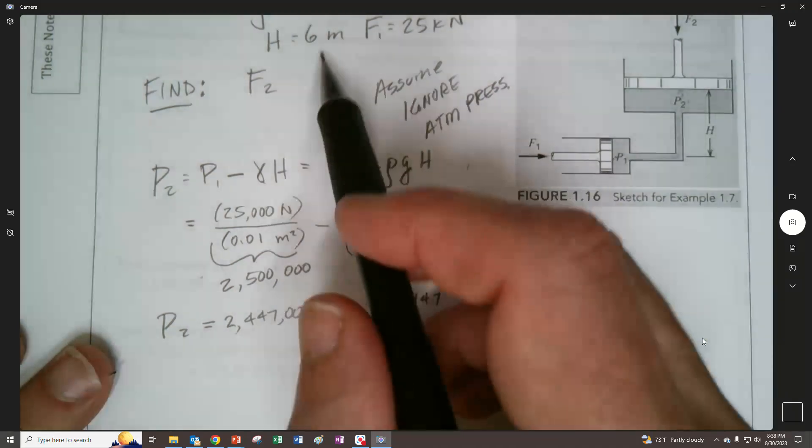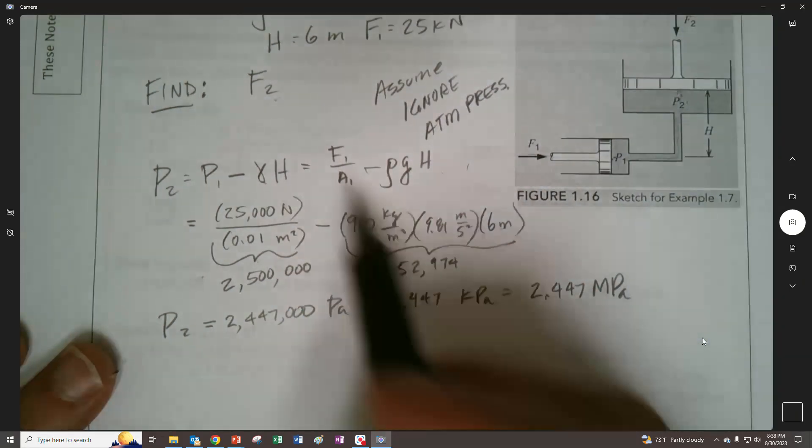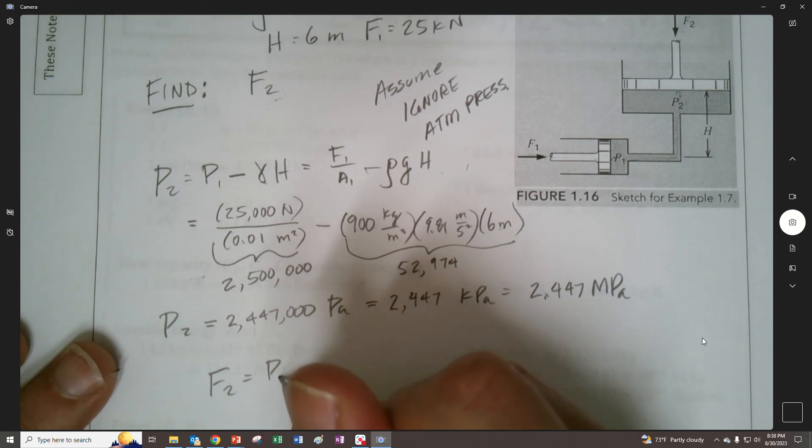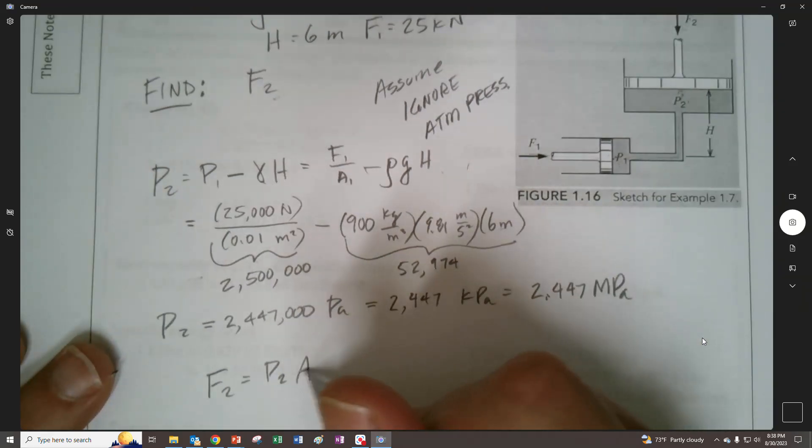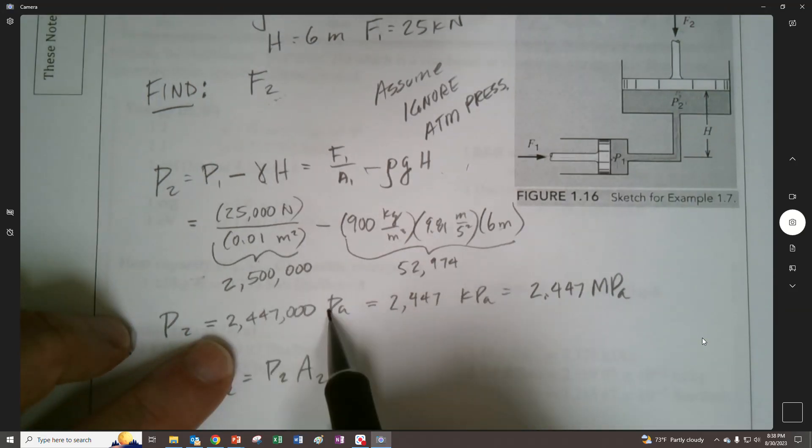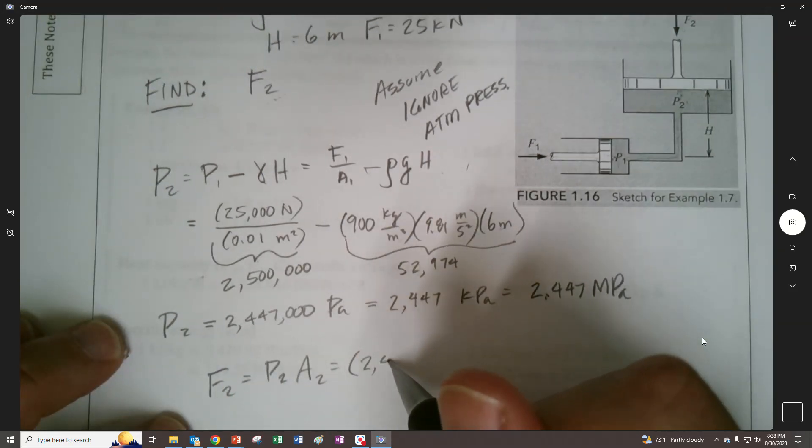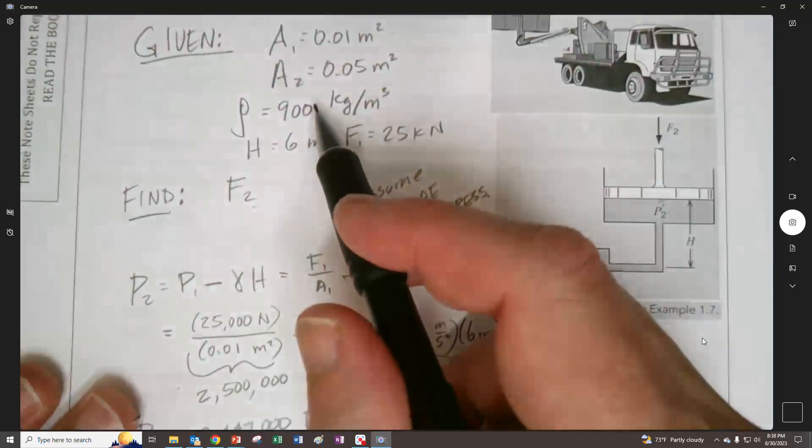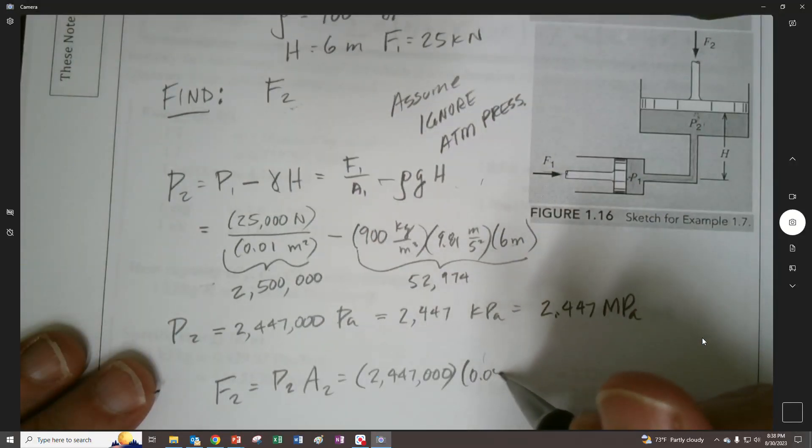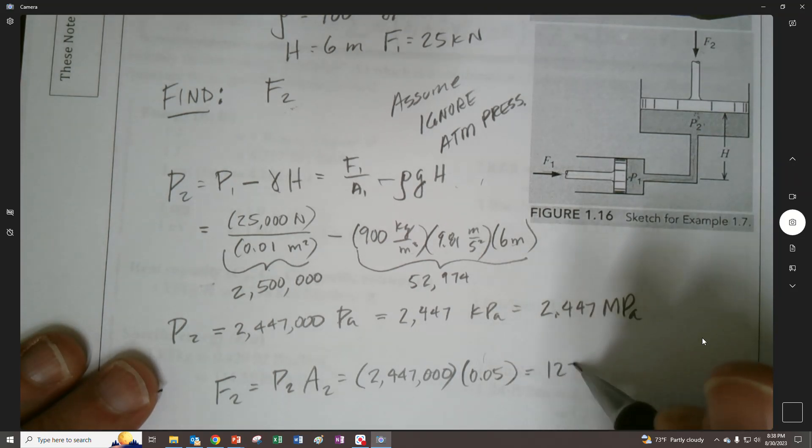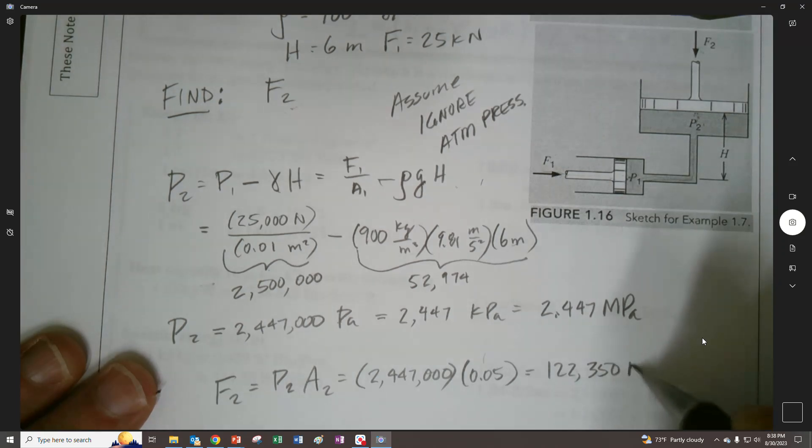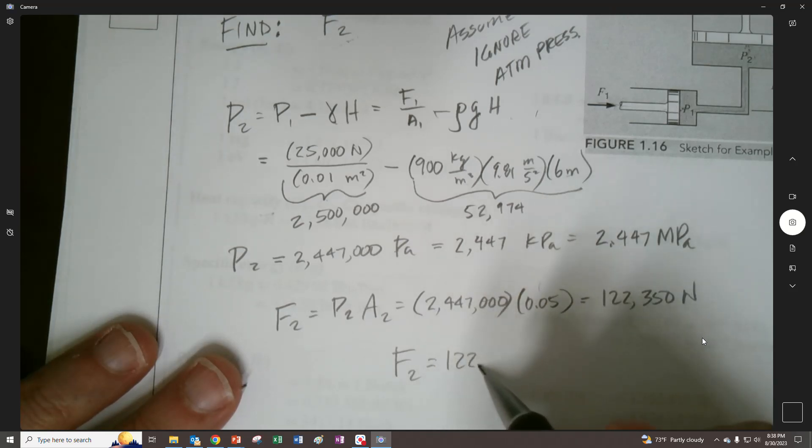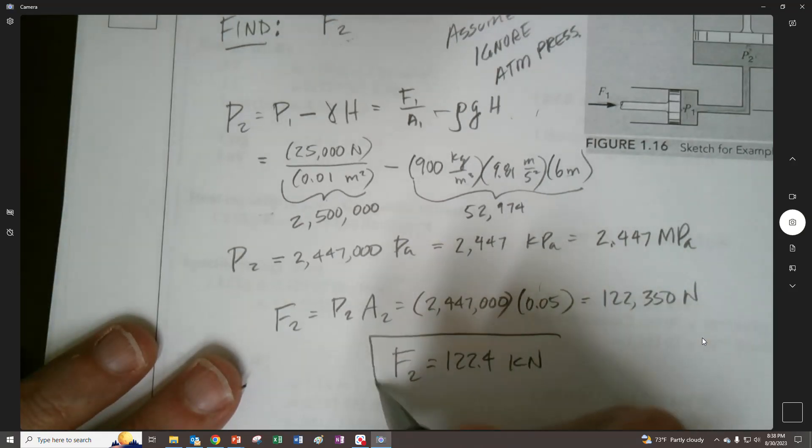But now we want, really what we wanted to find, remember, don't get distracted too much, we found that the pressure is, let's find out what F2 is going to be, we're going to find that F2 is going to be P2, the pressure, times A2. Or, let's go back to our newtons per meter squared, 2,447,000, and multiply it by our area 2, which is 0.05. And what we're left with is 122,350 newtons, and therefore we can write the answer as 122.4 kilonewtons and box it in.